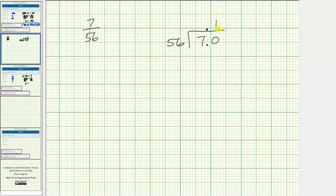There's one 56 in 70. 1 times 56 is 56. Subtract. 70 minus 56 is 14.